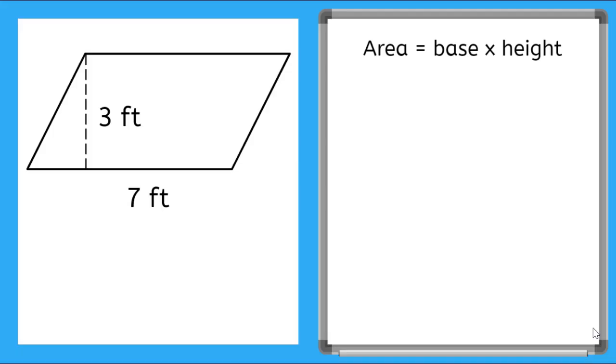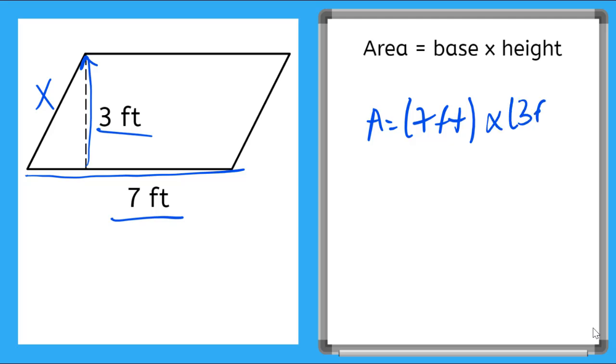So let's find the area of this parallelogram using our formula area equals base times height. So I know my base is this distance down here, measuring at seven feet. And I see that my height is this measurement here. Notice it's not the same as my side length, and it is three feet. So I can say area is equal to seven feet, my base, times three feet, my height, and that will give me 21. I have to square my unit square feet.